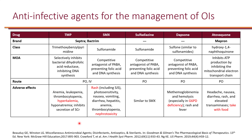Renal dose adjustment is required for trimethoprim-sulfamethoxazole: if creatinine clearance is less than 30, half the dose should be given. Sulfadiazine is also a sulfonamide, very similar to sulfamethoxazole. Dapsone is similar to sulfonamides and can cause methemoglobinemia and hemolysis, especially in patients with G6PD (glucose-6-phosphate dehydrogenase) deficiency. It is recommended to test for G6PD deficiency before use; if present, Dapsone should be avoided.